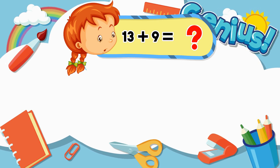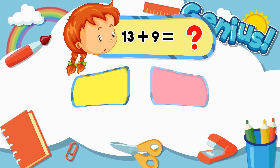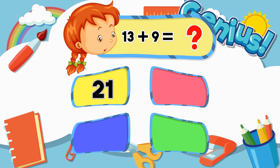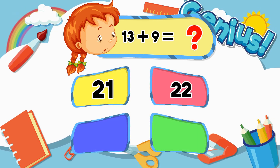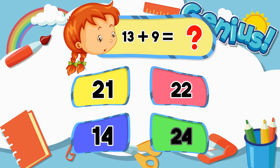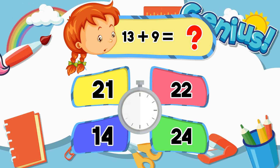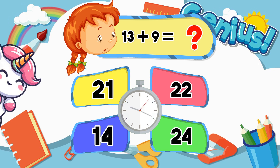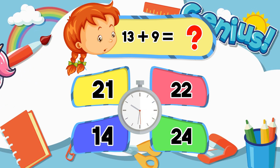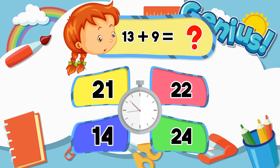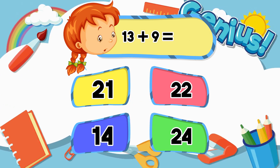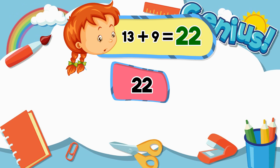What is thirteen plus nine? Twenty-one. Twenty-two. Fourteen. Twenty-four. Twenty-four. Twenty-two.